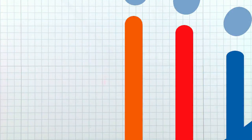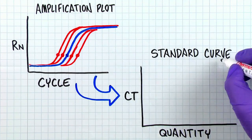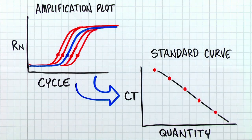Once your standard curve passes the metrics test, it can be used to evaluate an unknown sample. The CT value of the unknown sample is measured and compared to the standard curve to estimate the DNA concentration of the unknown sample.